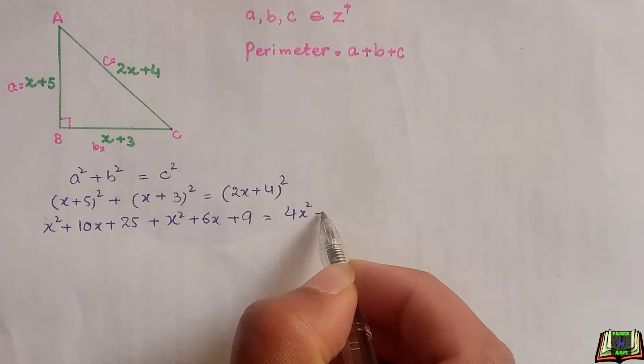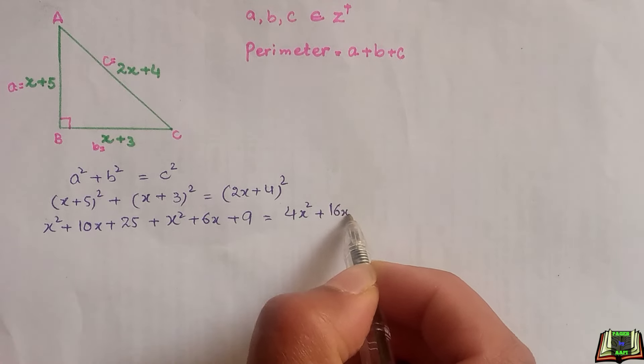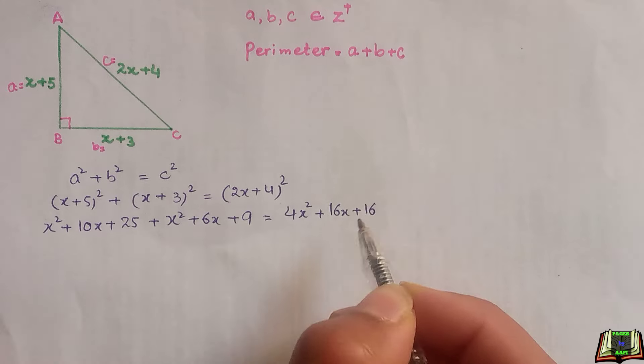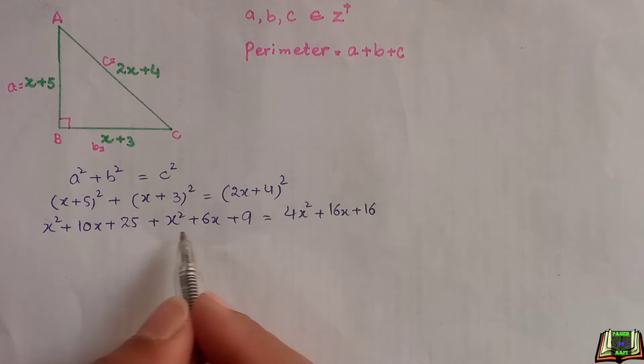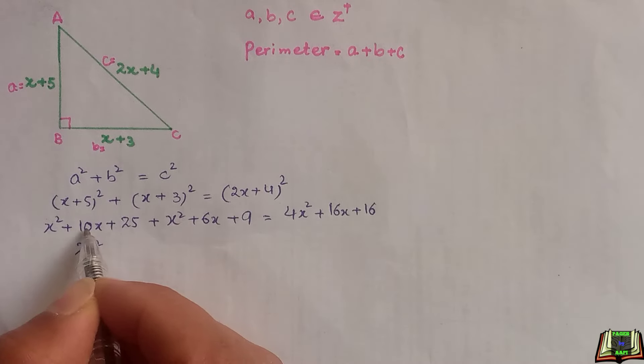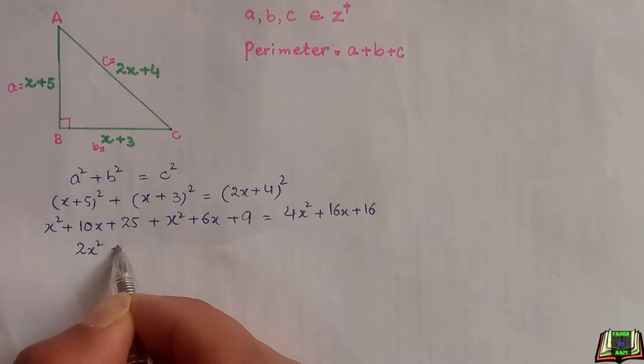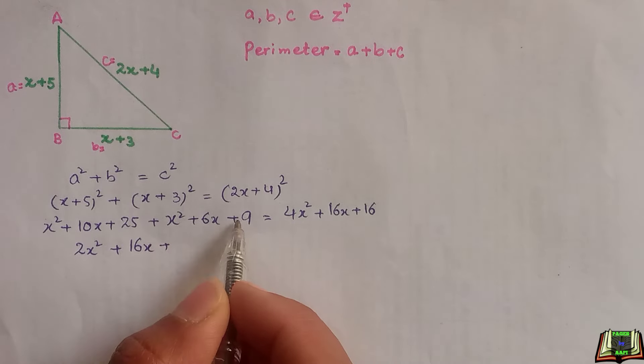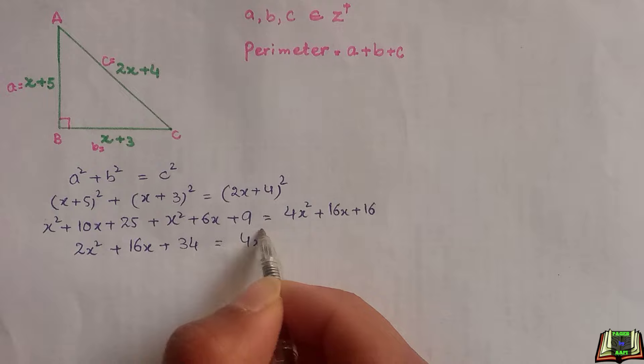Adding all the like terms: x squared, x squared, and 4x squared equals 2x squared on the left. 10x, 6x, 16x. 25 and 9 is 34. Right hand side as it is.